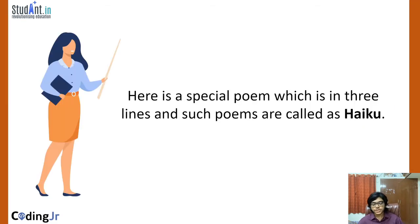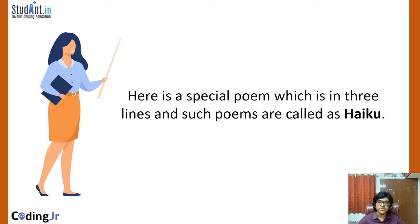There's a special kind of Japanese poem called a haiku. There are three lines in every haiku. In the first line there are five syllables, in the second line there are seven syllables, and in the third line there are again five syllables.